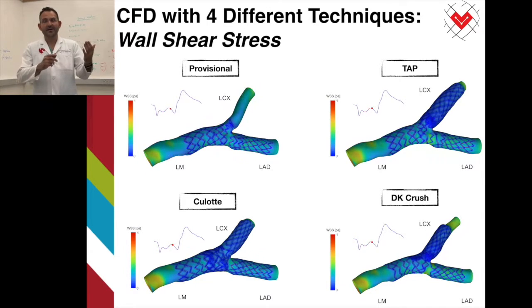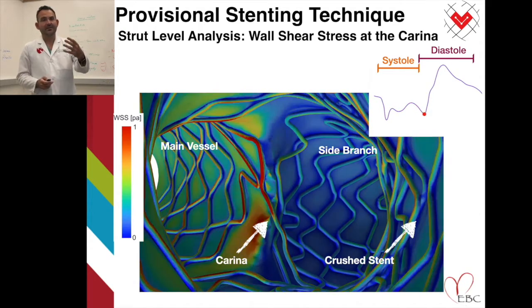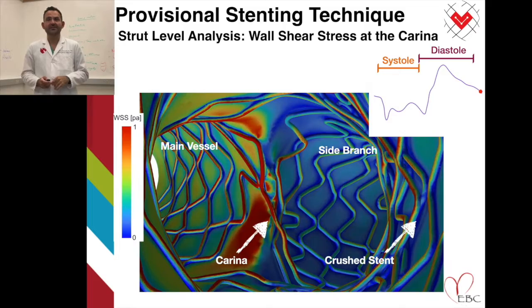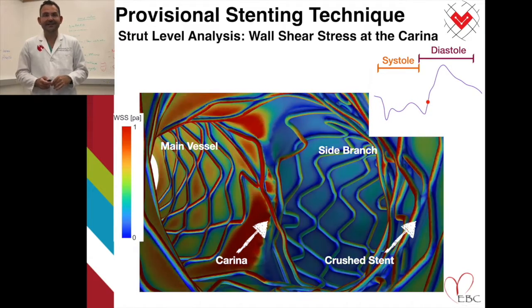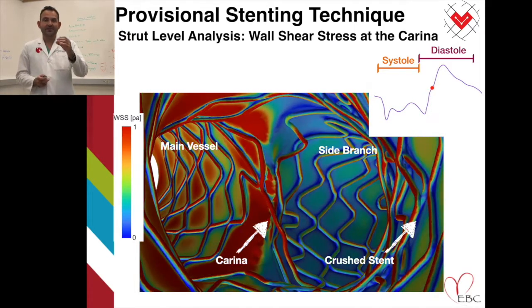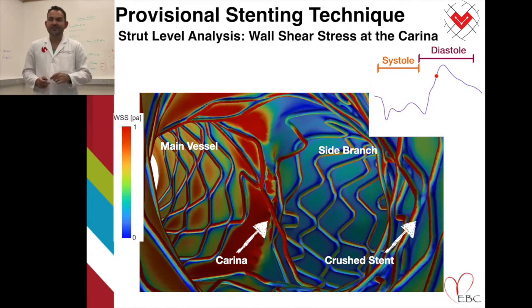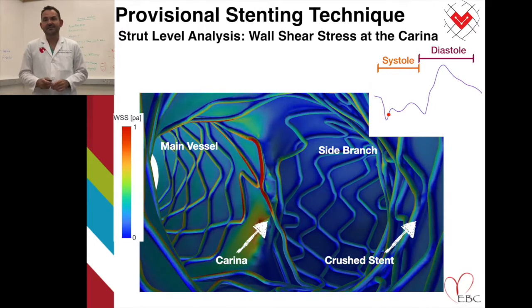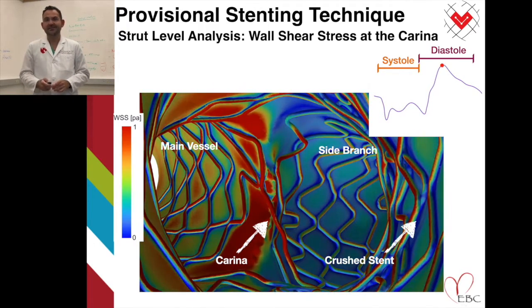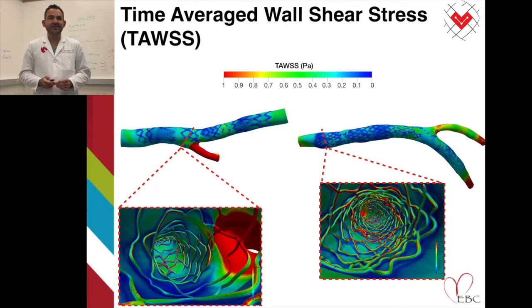We can also have a closer look at the strut level. Here you can see in a DK crush technique the distribution of shear stress on the main vessel, side branch, and at the carina. You see the flow acceleration around the stent struts at the carina during diastole. We can even see the crushed part of the stent — this double-layer stent at the distal main vessel close to the side branch ostium. We also have the opportunity to cut across different locations of the stent segments and see how the flow is distributed there as well.